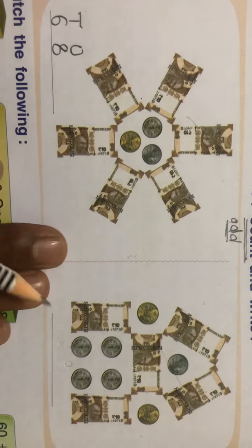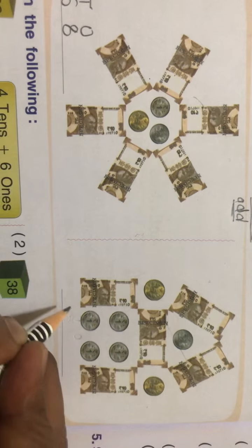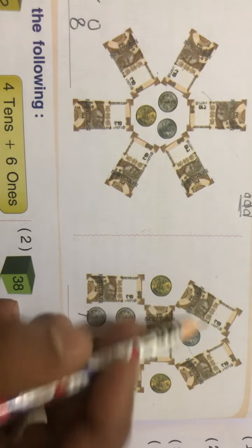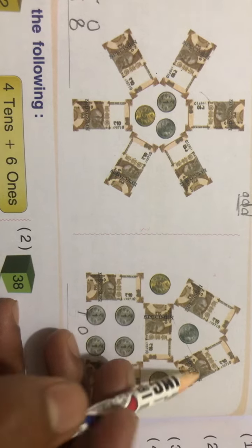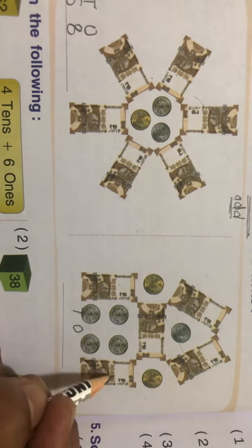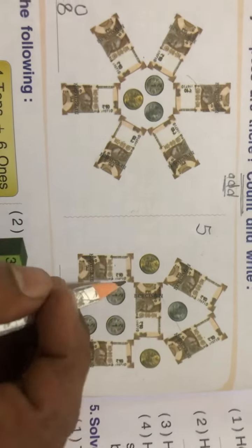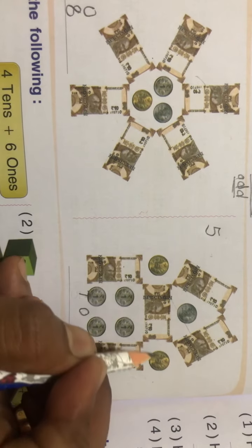Now see the next one here. Again write tens and ones and count how many tens are there: one, two, three, four, five. Already we are having five tens. After that, if you'll see, you will find two coins of five rupees.